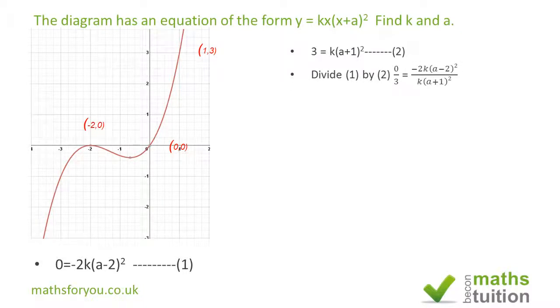That will give us zero divided by three, which gives zero. If we cross multiply, we still get zero. If we multiply zero by k into a plus one squared, we get zero. Similarly, if we divide both sides by minus two k, we still get zero.